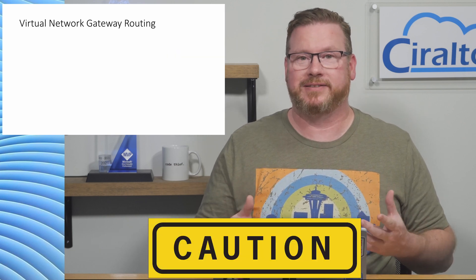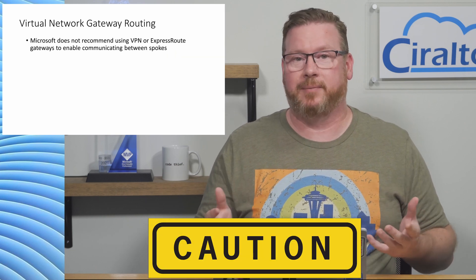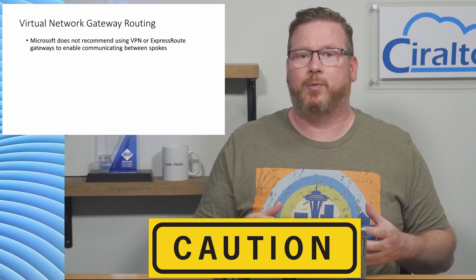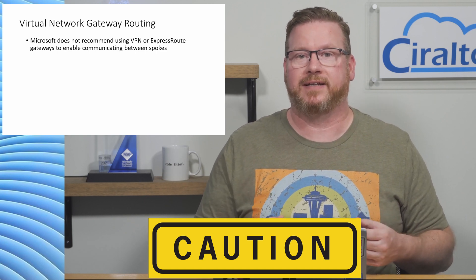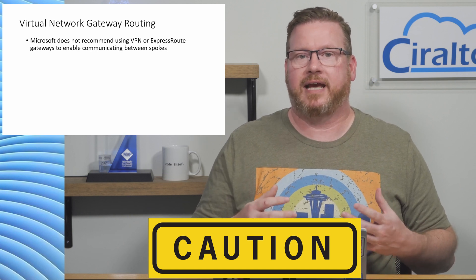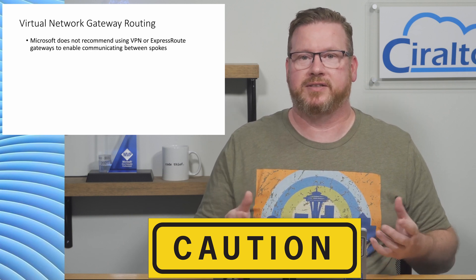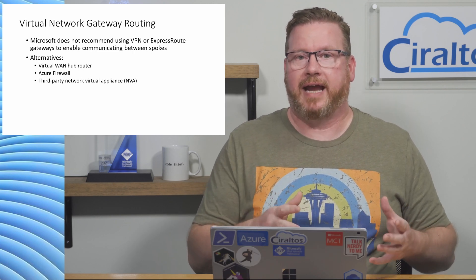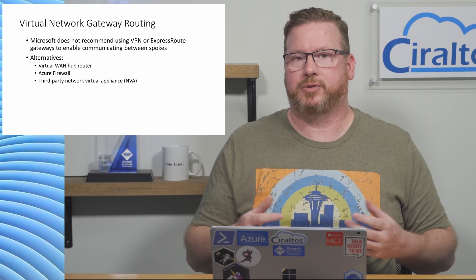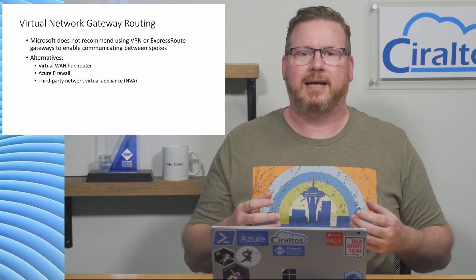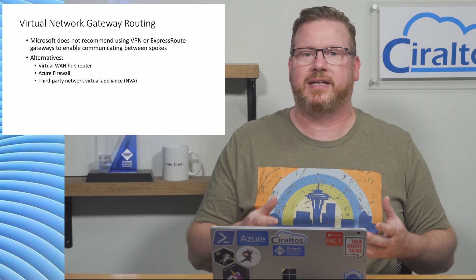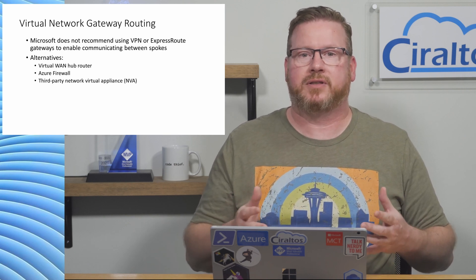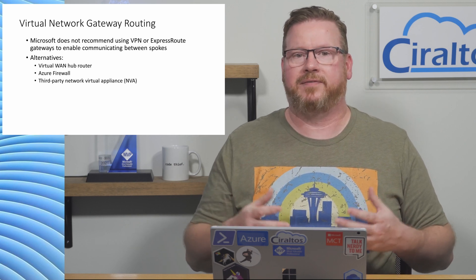I also have a warning for anyone thinking about using this solution: Microsoft does not recommend this configuration. The VPN gateway is designed to encrypt traffic, not act as a router — there's no guarantee on bandwidth between the spokes. Instead, Microsoft recommends a Virtual WAN hub router, Azure Firewall, or a network virtual appliance. I'm still showing this example because there are fringe use cases where it may be the best option, and it's an interesting example of how the technologies work together.